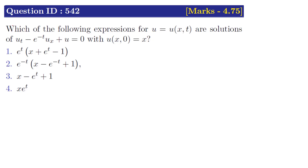The question is: which of the following expressions for u = u(x, t) are solutions of u_t minus e^(−t) · u_x plus u = 0, with initial condition u(x, 0) = x?